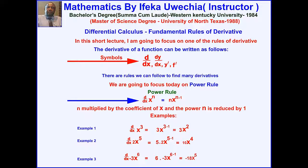Let us look at example number 3. You are asked to find the derivative of negative 3x raised to the power 6.